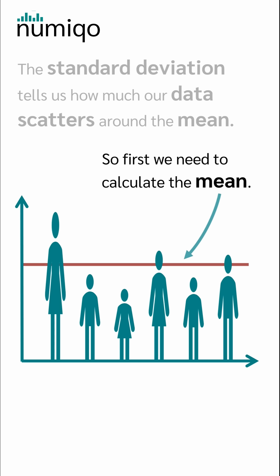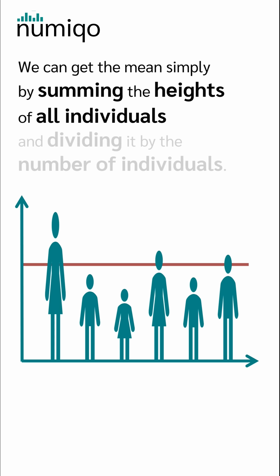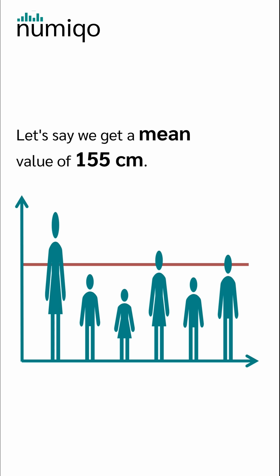First we need to calculate the mean. We can get the mean simply by summing the heights of all individuals and dividing it by the number of individuals. Let's say we get a mean value of 155 cm.